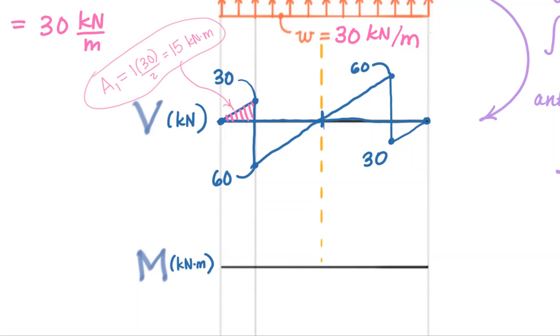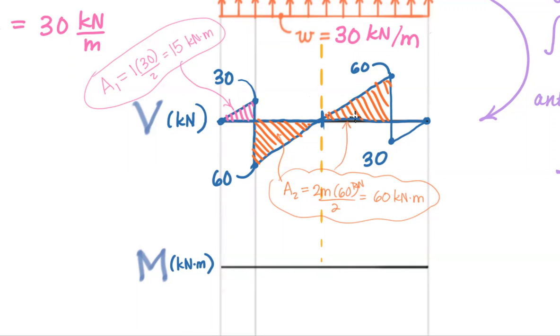This larger triangle, call that area two. It has a base of two meters, and a height of 60. Again, divide by two. So that area is equal to 60 kilonewtons times meters. And then of course, we see the pattern from anti-symmetry. So there's another area two. And lastly, this last little triangle is the same as area one. So we've got all the areas that we need.